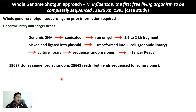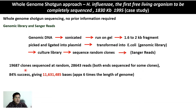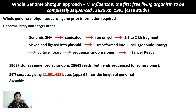After making the genomic library, clones were picked at random for sequencing. In this study, 19,687 clones were sequenced at random, generating around 28,643 reads because some clones were sequenced from both ends and others from only one end. After quality control, there was an 84% success rate. Putting all the nucleotides from these reads together gives approximately six times the length of the genome in total coverage.